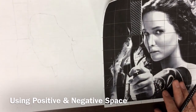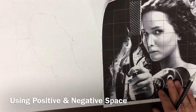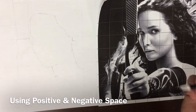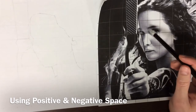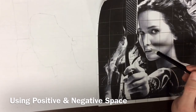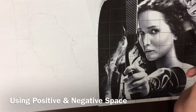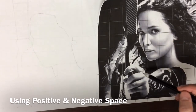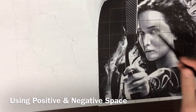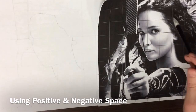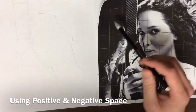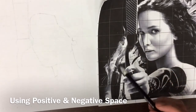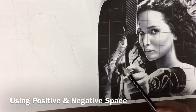First of all, positive and negative space — you want to have a good idea of what those are before you start using this. Positive space is the area in your image that is the subject matter. So for example, this bow right here would be positive space — her hand, her face, her hair, all of this. The background would be considered the negative space, or the space that's not the subject matter.